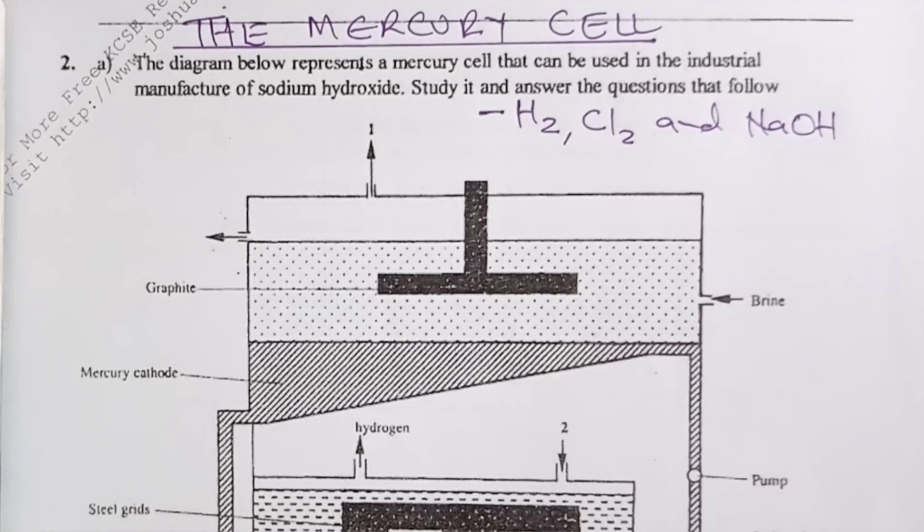Welcome to this video as we present the working of the cell and then we answer KCSE chemistry paper 2 as tested in the year 2000, in which mercury cell was tested as question number 2. Welcome and stay on till the end of the video.